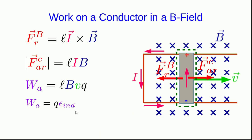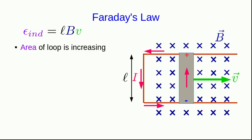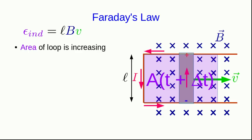That work equals the work done by the EMF, which shows us that the induced EMF is related to the length of the rod, the B-field it's moving through, and its speed. Now we've got an expression for the induced EMF and we want to relate it to the rate of change of magnetic flux. The flux is changing because the area of the loop is increasing. At some time it has some area, and at a later time — when the rod has moved further — it has a new area, with the rod having moved a distance delta x.